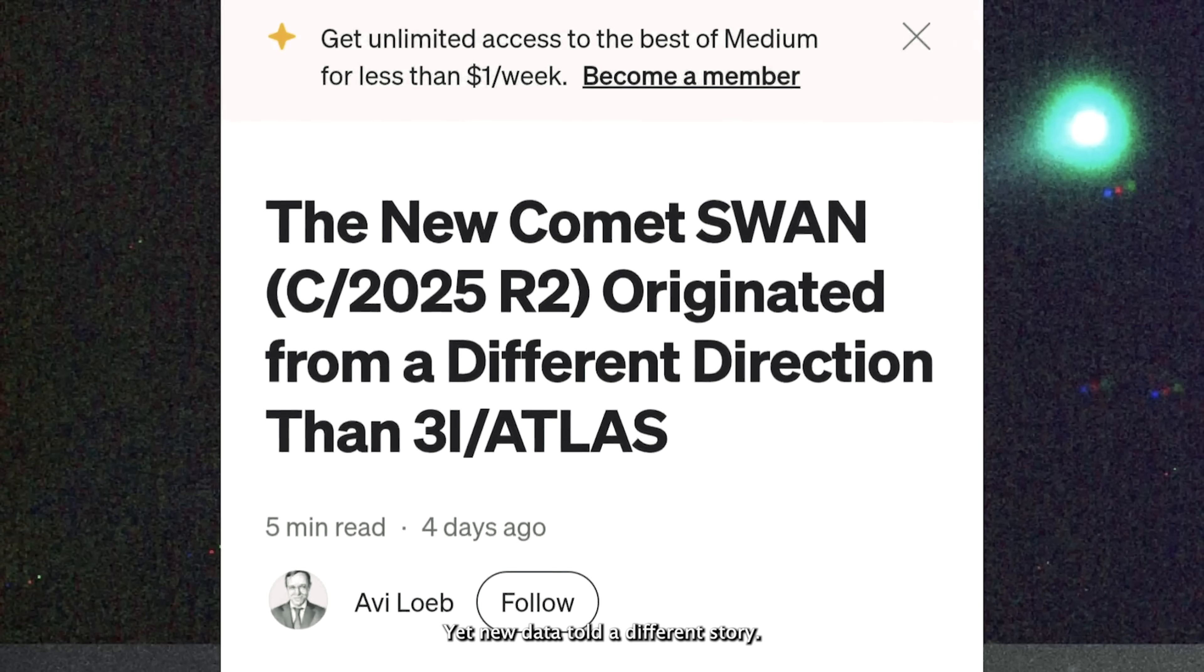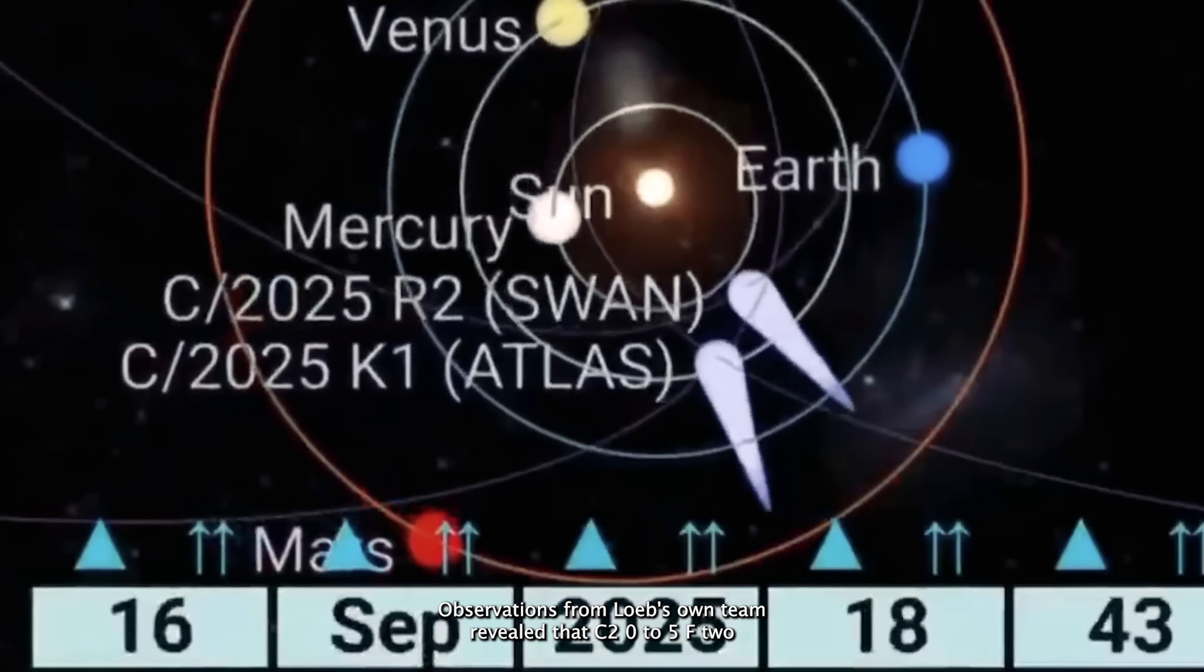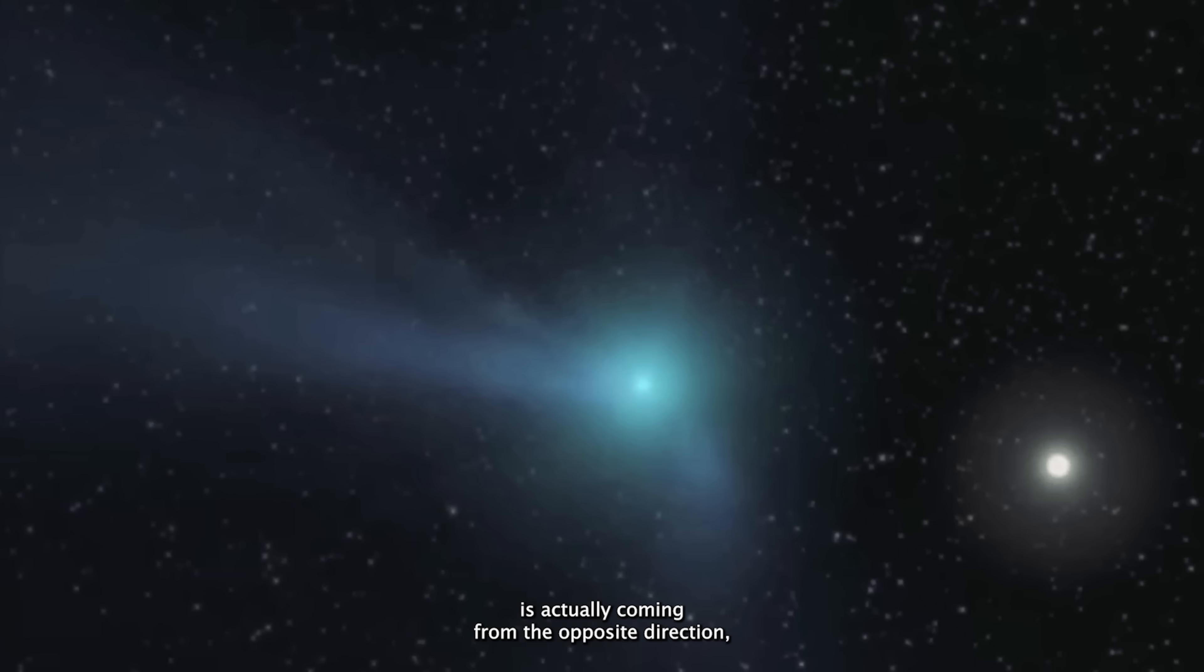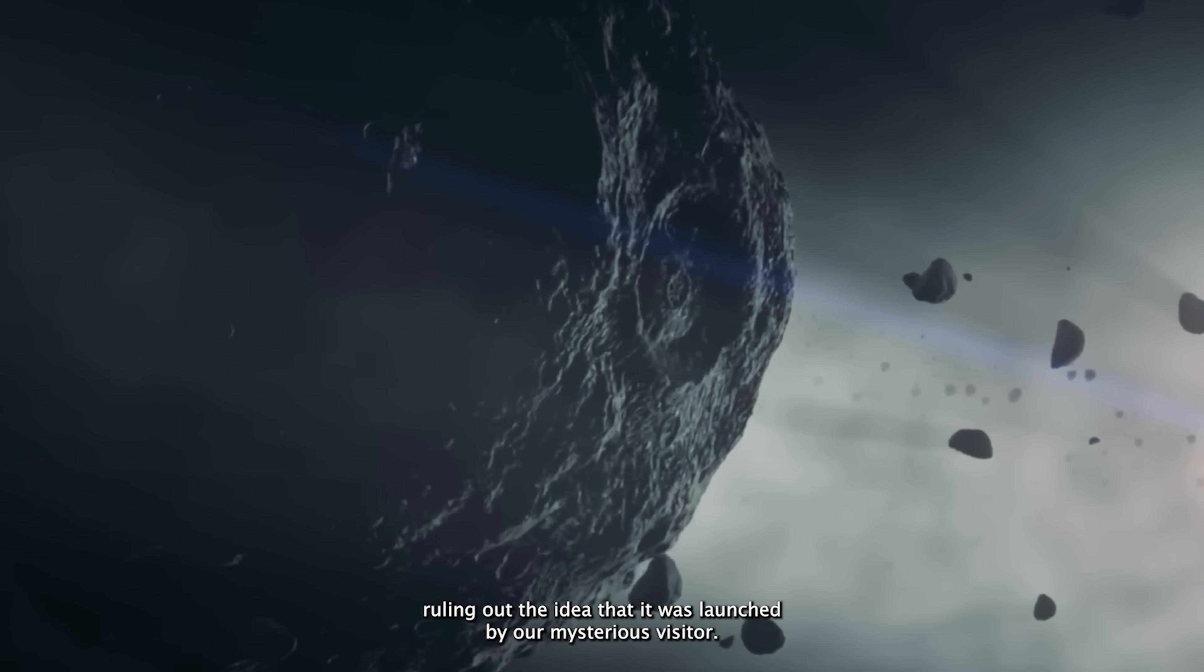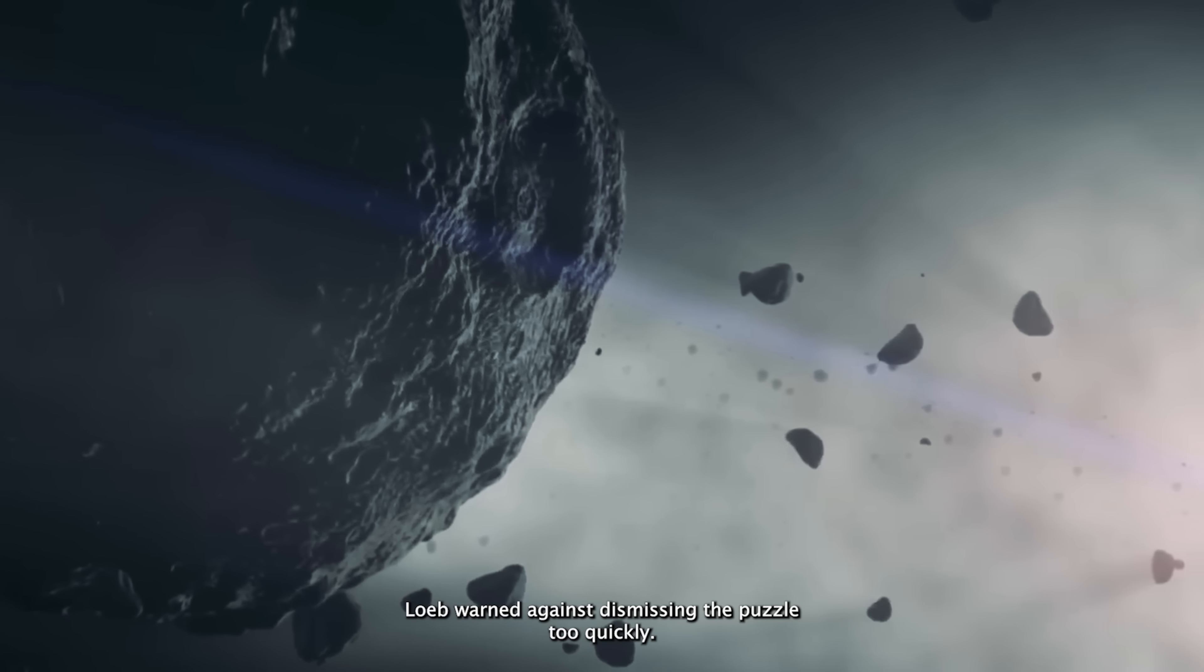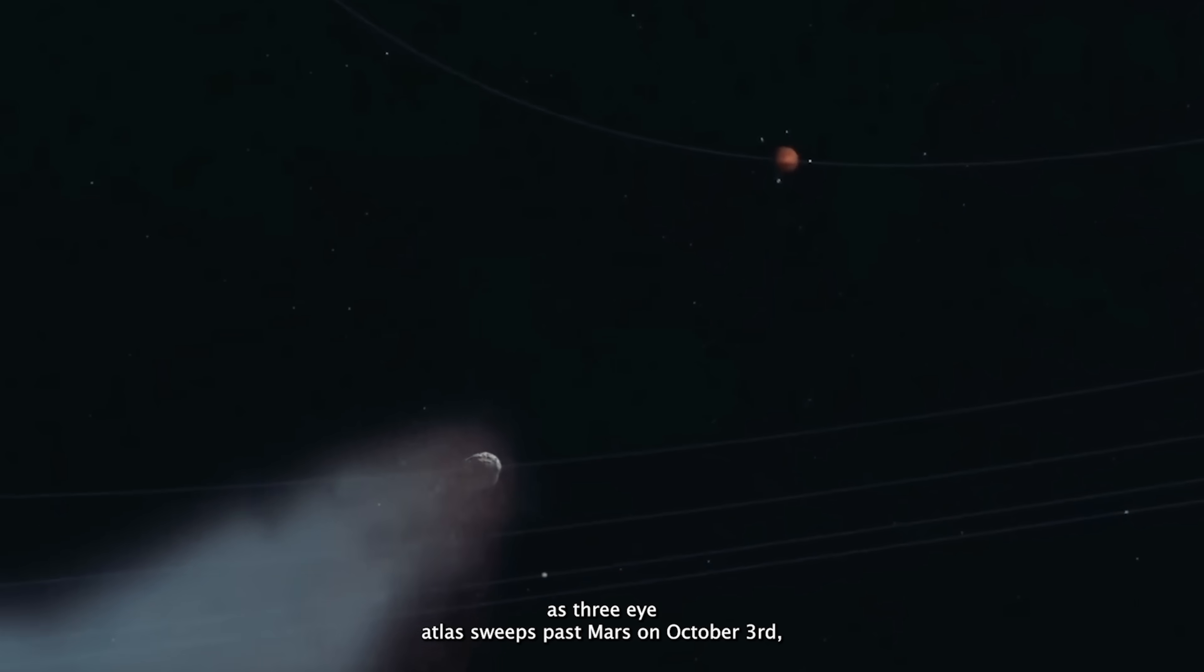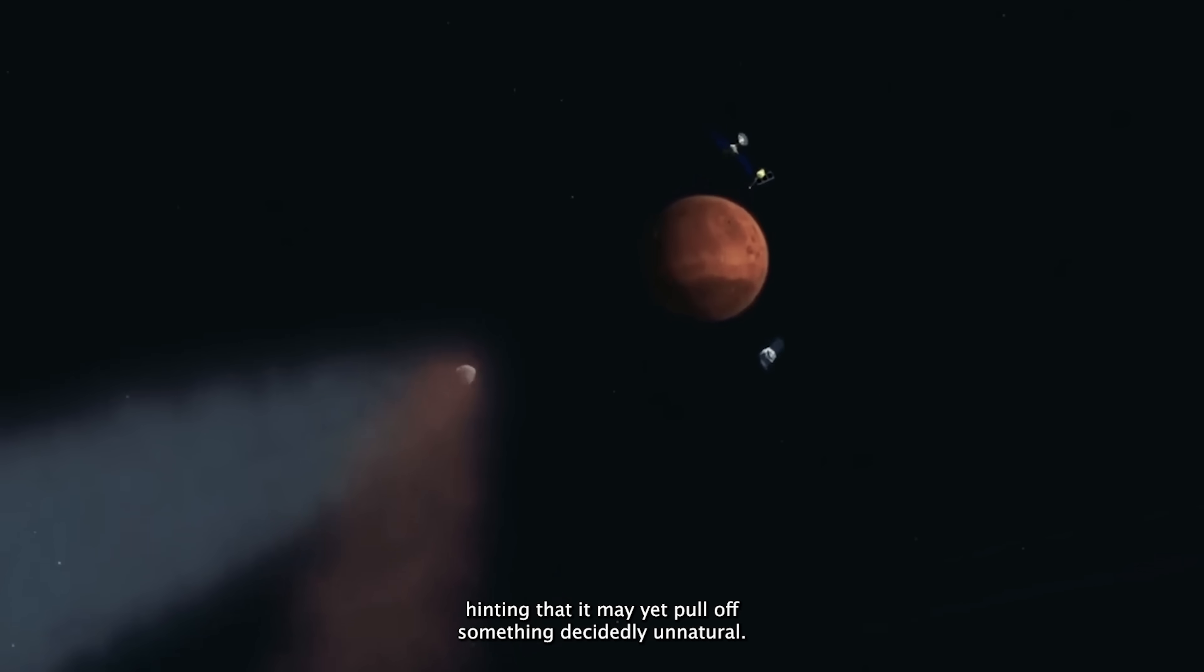Yet new data told a different story. Observations from Loeb's own team revealed that C2025F2 is actually coming from the opposite direction, ruling out the idea that it was launched by our mysterious visitor. Still, Loeb warned against dismissing the puzzle too quickly. He urged astronomers to keep watching closely as 3i Atlas sweeps past Mars on October 3rd, hinting that it may yet pull off something decidedly unnatural.